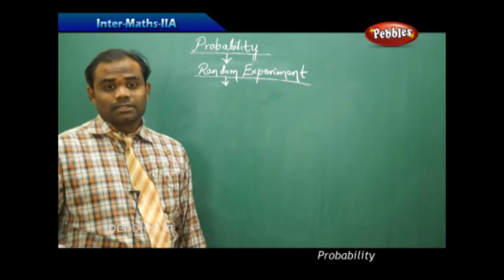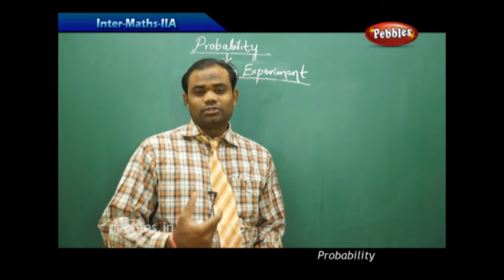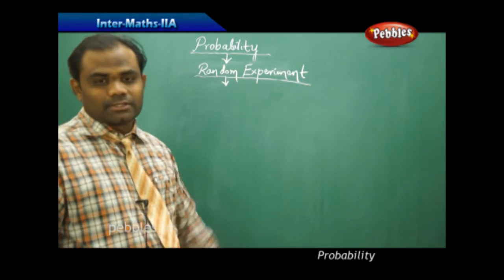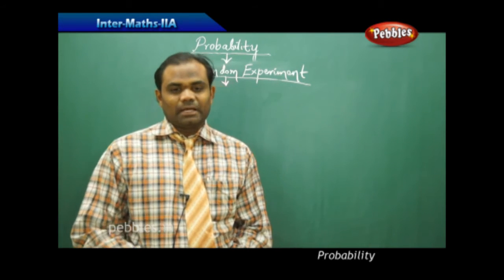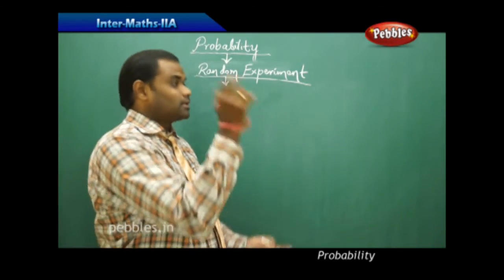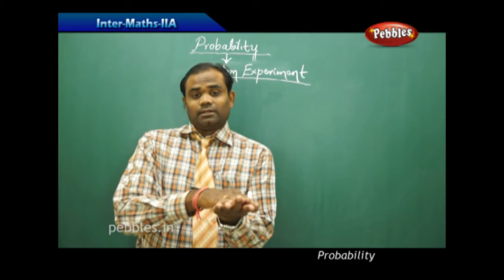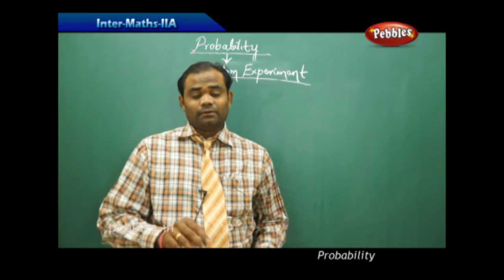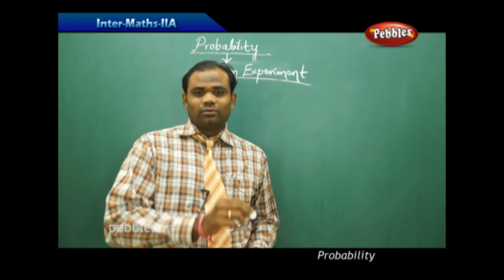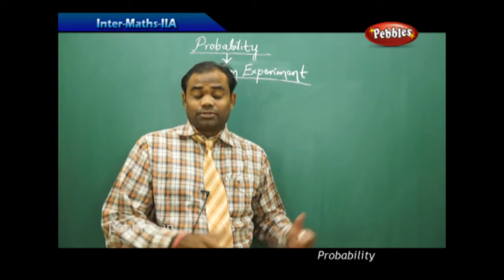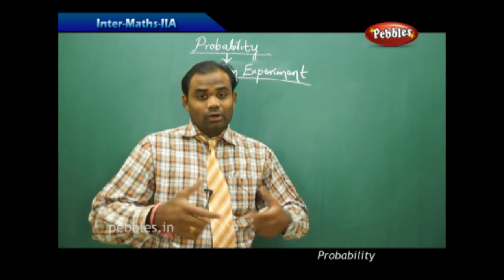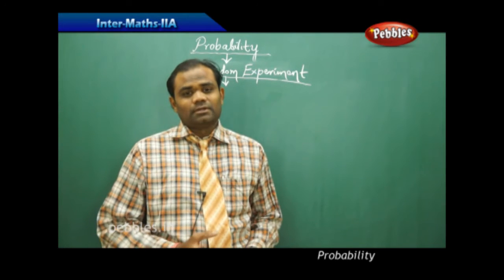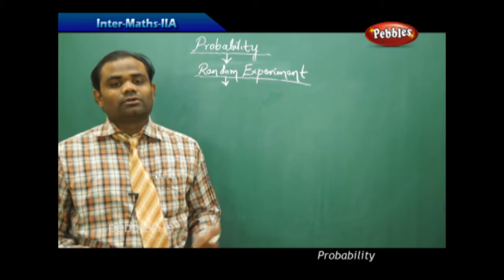Now let's see some statistical terms in probability which are very useful when we solve problems or investigate chances. The first important term is random experiment. Coming back to tossing of a coin — when I toss a coin I don't know the possible outcome of a head or a tail. I can toss a coin any number of times and get different outcomes; I cannot know in advance whether my second attempt will give a head or a tail. Such an experiment where the outcome is unknown in advance is called a random experiment.